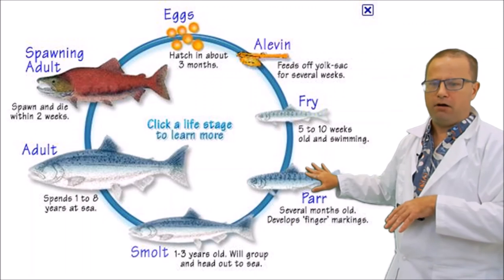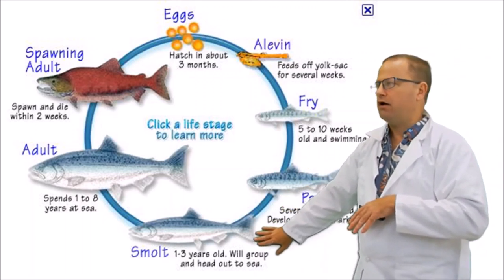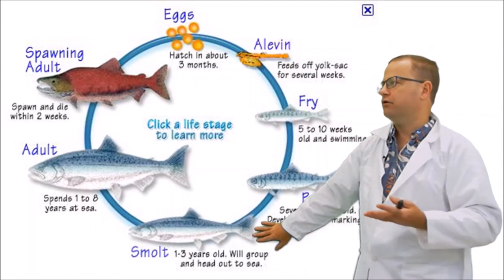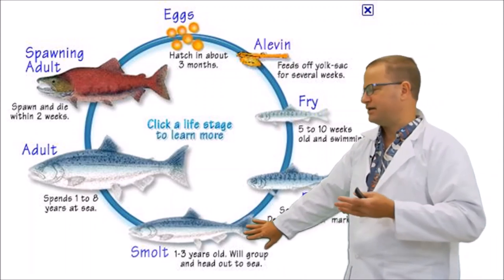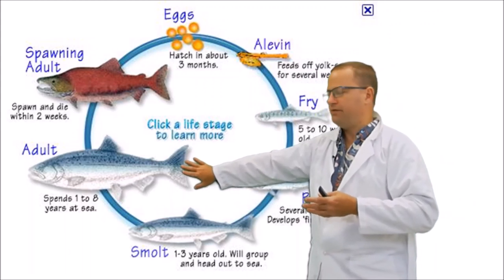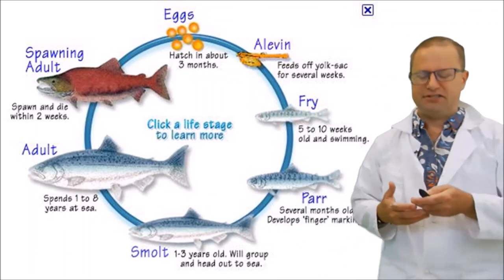And eventually metamorphose into something called a parr, which is just a juvenile fish. Parr and smolt are both juveniles. Parr have these little lines going up and down, and then smolts are a little bit larger, get up to a year old, and they voyage eventually into saltwater where they're going to complete their lifecycle, become adults. And those adults eventually come back to freshwater to spawn. So this is a classical sort of anadromous species.